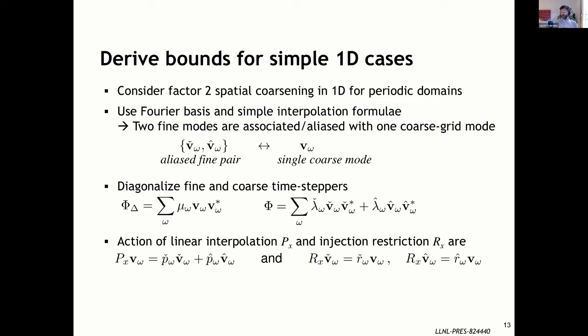To derive bounds, we make a few more assumptions for tractability — specifically, factor-of-two spatial coarsening in 1D for periodic domains. This allows a Fourier basis and simple interpolation formulas. With uniformly spaced points in space, two modes on the fine grid get aliased down to a single coarse grid mode. So a single coarse grid eigenmode V is aliased back and forth with two modes on the fine grid — one smooth (representable on the coarse grid) and one very oscillatory (aliased to the smooth mode on the coarse grid).